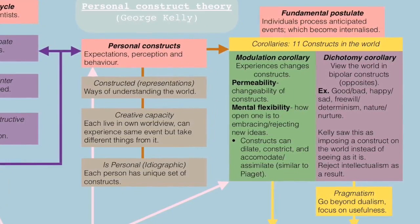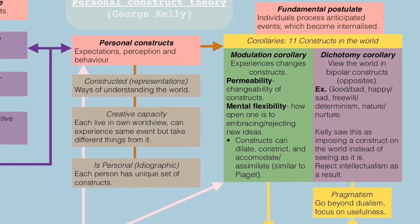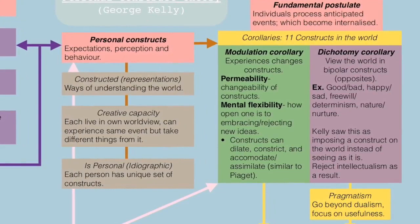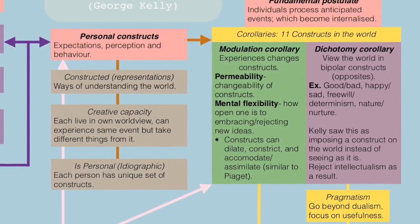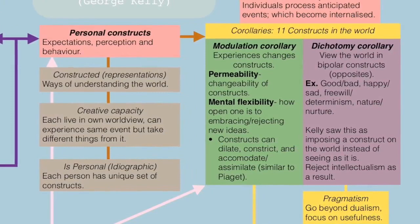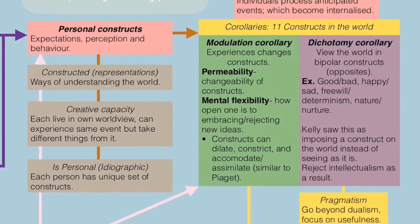There is also the dichotomy corollary, which is the view that the world is split into bipolar constructs or opposites. Examples include good/bad, happy/sad, free will/determinism, and nature/nurture. Kelly saw this as imposing a construct on the world instead of seeing it as it actually is, and he himself rejected intellectualism as a result.